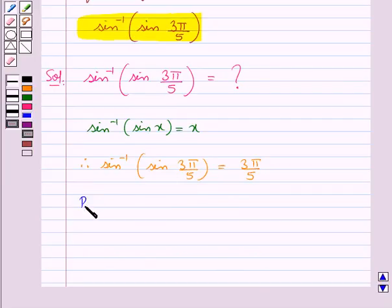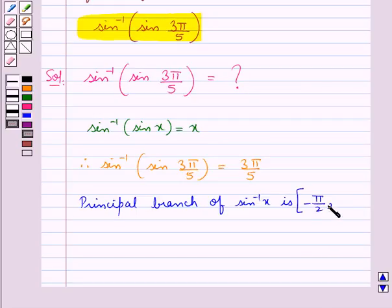Now the principal branch of sine inverse x is the closed interval minus pi by 2 to pi by 2.